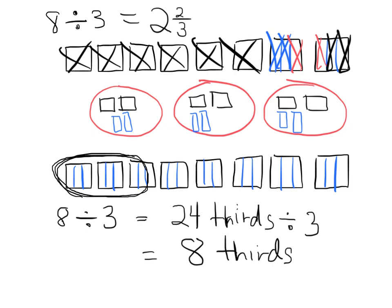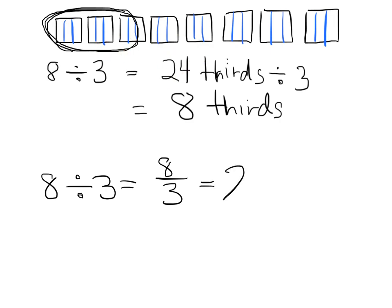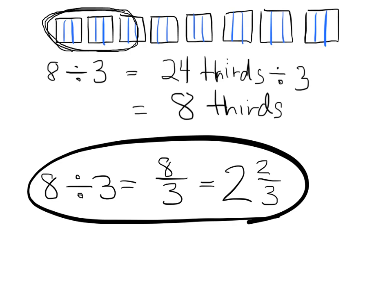So we can see — and the whole thing that we want our students to learn is that 8 divided by 3 is equal to 8 thirds, because we just showed it right up here. And that 8 thirds is equal to 2 and 2 thirds. And that's the big thing. This is where we're going. Today we're really going to be starting to move to the standard algorithm for changing a fraction like 8 thirds into a mixed number.